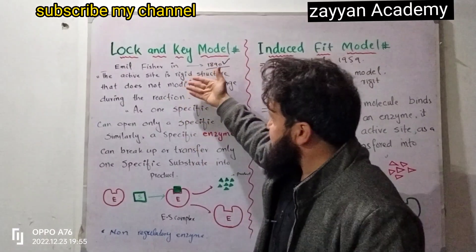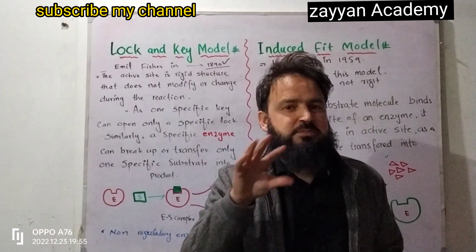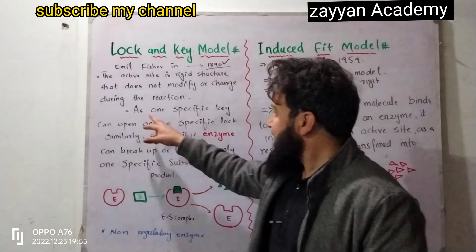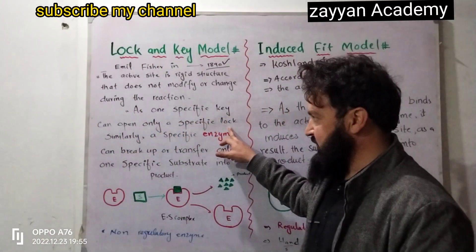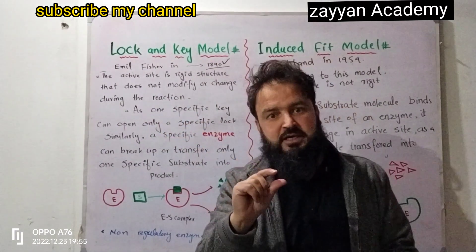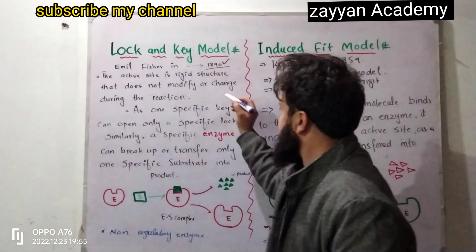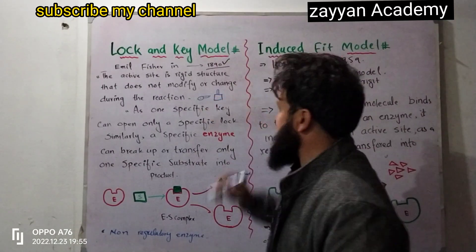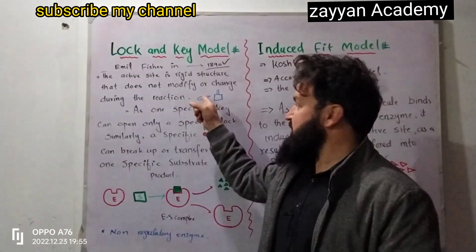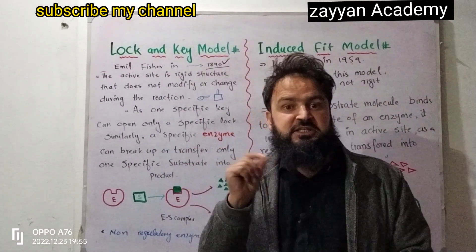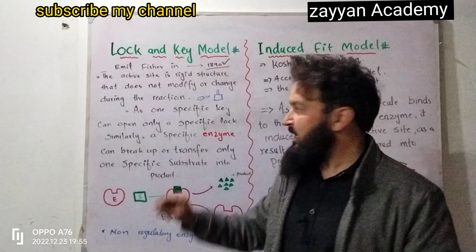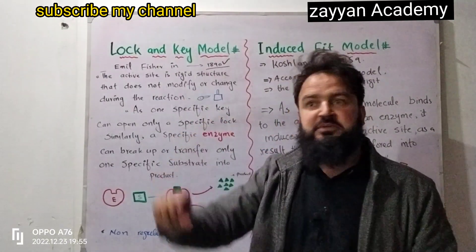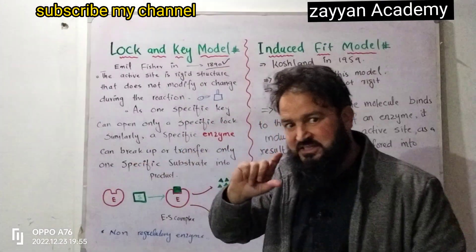This model emphasizes highly specificity. Just as one specific key can open only one specific lock, a specific enzyme can only act on a specific substrate. Another key cannot open a different lock — this represents the specificity of the enzyme-substrate interaction.